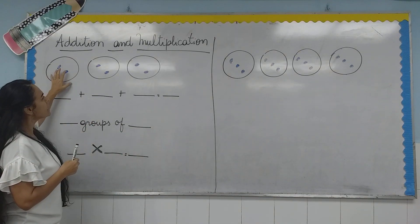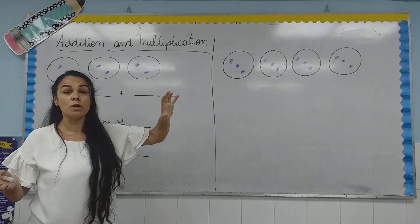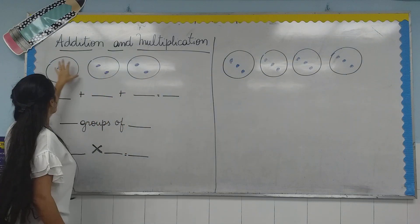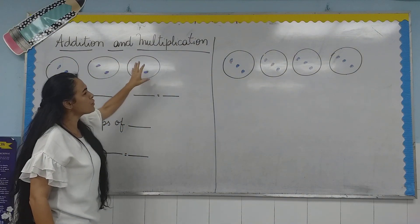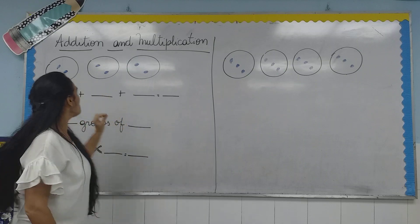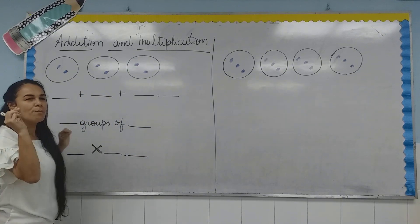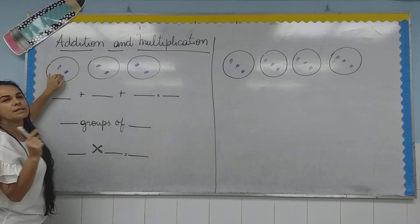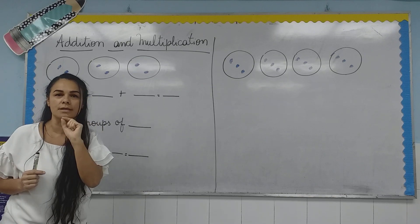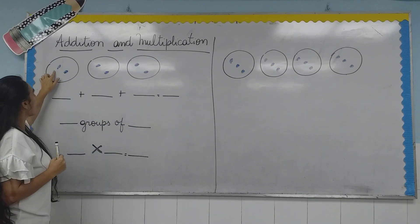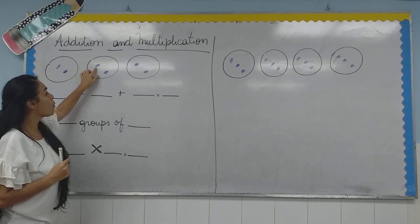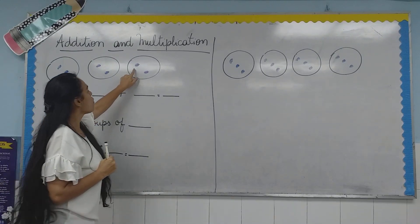We have three groups. How many groups? Three groups. One, two, three groups. In each group, how many items do you have? How many circles? How many blue circles do we have in each circle? Let's count. One, two. One, two. One, two.